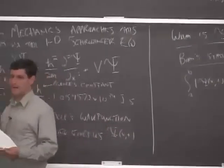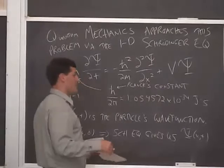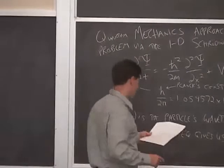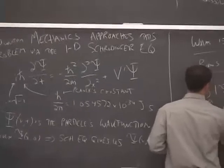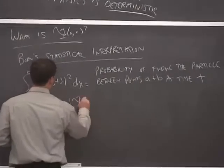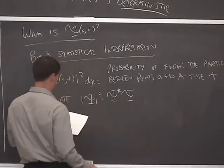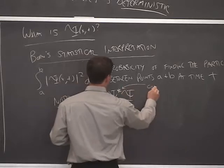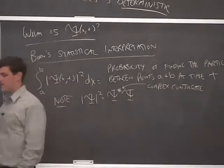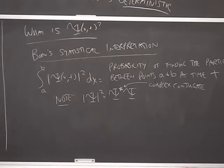So magnitude squared of ψ, an integral of that over some region in space, tells us the probability of locating the particle. It doesn't tell us anything about where the particle is, per se. It says what the probability is of finding the particle at some region in space. We should point out that ψ in general is a complex function. And as a result, the magnitude squared of ψ can be calculated by taking the complex conjugate of ψ times ψ. So this star means complex conjugate.